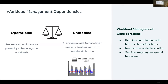Workload management through time shifting or space shifting can help use less carbon-intensive power by scheduling workloads smartly. However, on the embodied side, this may require additional server capacity to allow headroom for workload shifting. Other considerations include the need to coordinate demand response solutions with battery charge and discharge decisions — for example, when renewables are unavailable, do you postpone workloads, charge batteries, or draw from batteries? This needs to be a scalable solution, and some services requiring special hardware like AI training or video encoding may further limit flexibility.